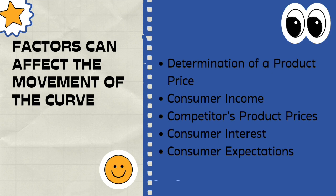The third factor is competitors' product prices. Competitor prices can also have an impact on the demand for an item. It is important for a company to analyze the price of the same product from competitors before setting its own price. If the price of the same product belonging to a competitor is lower and still makes a profit, consumers' demand for these goods will increase.